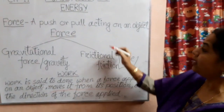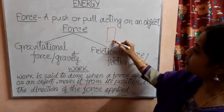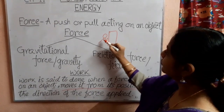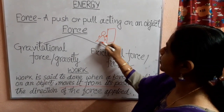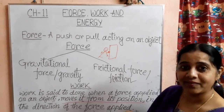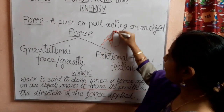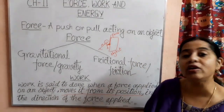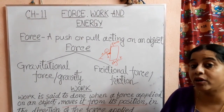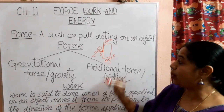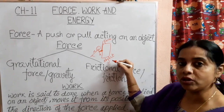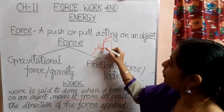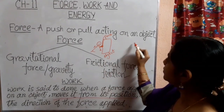Work is said to be done only when — suppose this is an object and you apply force on it. When you apply force on this object, it comes to a new position. This is the distance covered by this object when you apply force — displacement of the object takes place, meaning movement of the object, meaning the object changes its place, its position. When you apply force towards one side, the object moves towards that side.